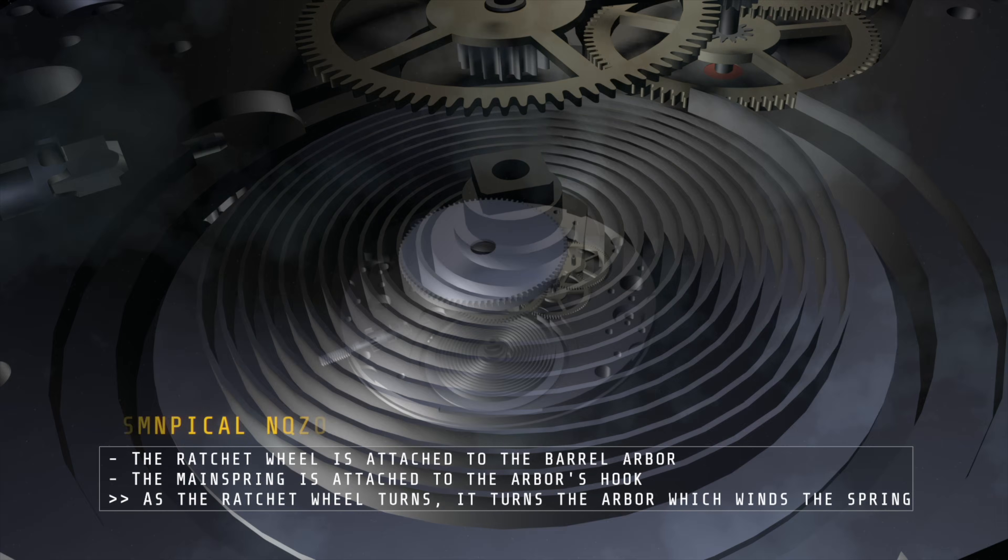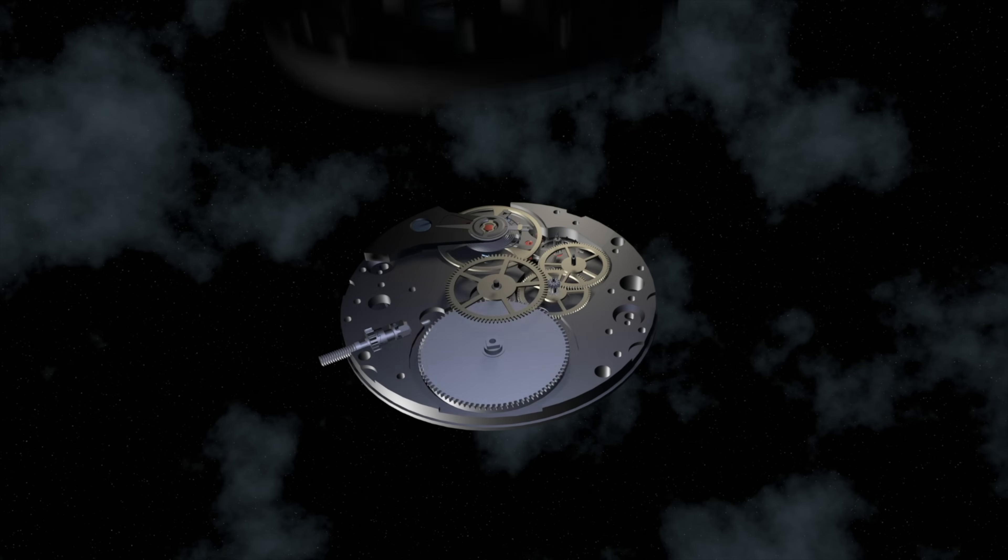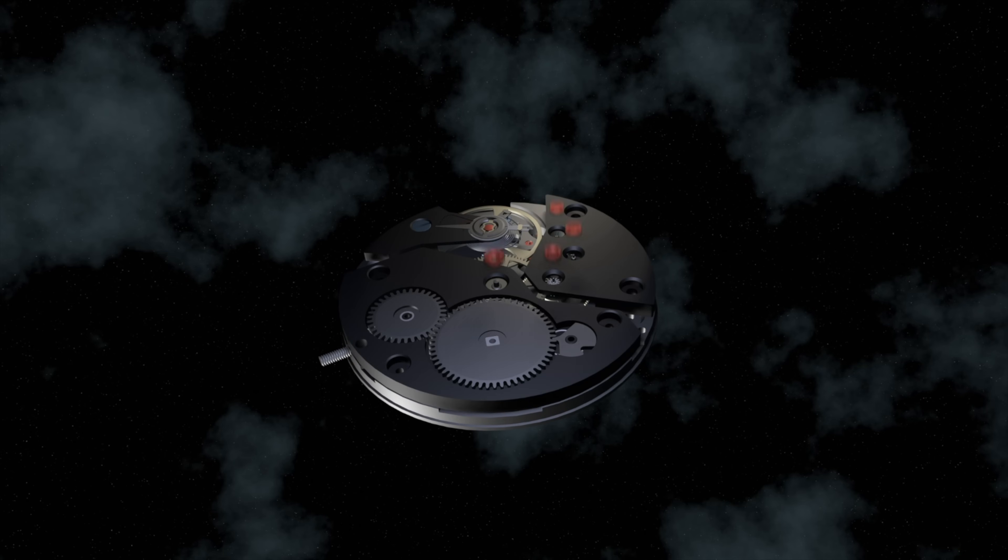To avoid that the mainspring instantly unwinds as you tighten it, you can see that you have a click right there which presses into the ratchet wheel, which prevents the mainspring from instantly unwinding.